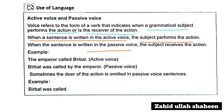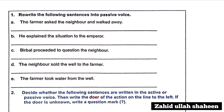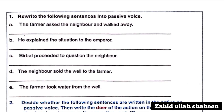If you find a sentence in passive voice, the subject receives the action. For example: 'The emperor called the vizier' — this is active voice. 'The vizier was called by the emperor' — this is passive voice. Sometimes the doer of the action is omitted in a passive voice sentence. We rewrite the following sentence into passive voice: 'The farmer asked the neighbor and walked away' becomes 'The farmer was asked by the neighbor and walked away.'